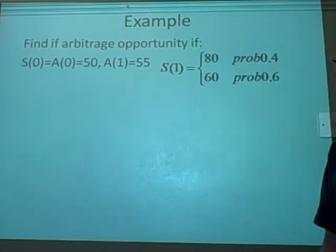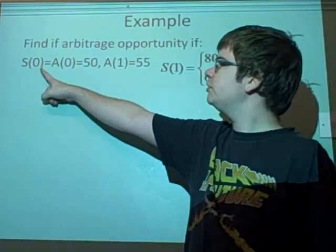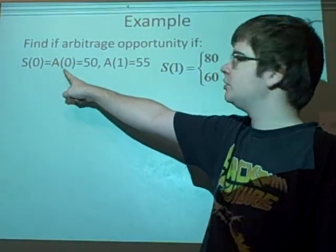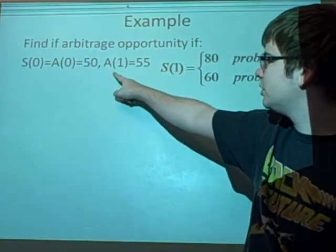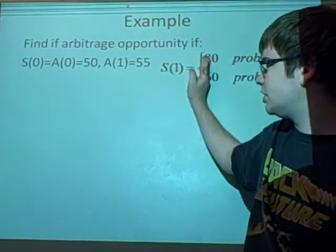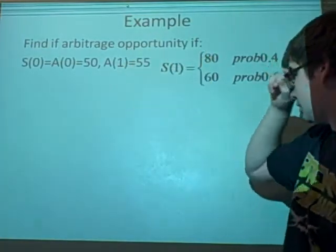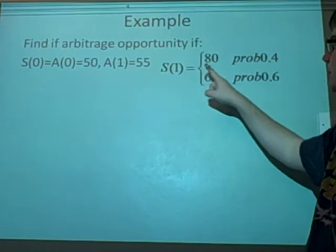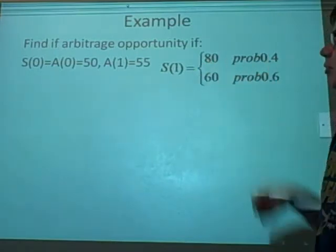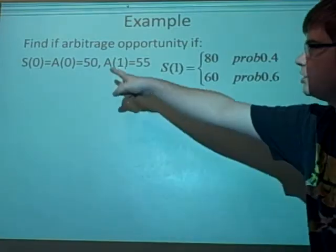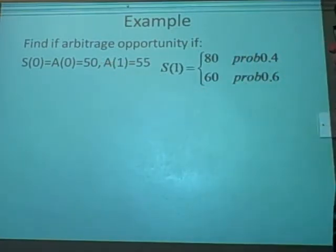Example: Find if there is an arbitrage situation where the initial stock value equals the initial bonds, which equals 50. Our bonds change price at the next time to 55. Our stocks change to 60 with probability 0.6, and 80 with probability 0.4. Obviously stocks are the best thing to invest in because they always go up, but we want to see if we can use this.